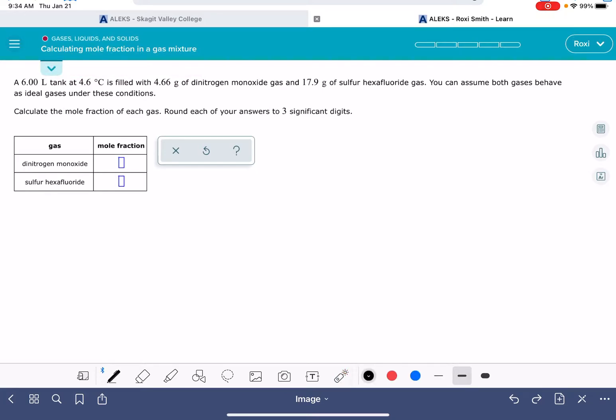The equation for calculating the mole fraction is to take the number of moles of whatever gas you're talking about and divide that by the total number of moles of all gases in the mixture. So the mole fraction of gas A equals the number of moles of gas A divided by the total number of moles in the mixture.